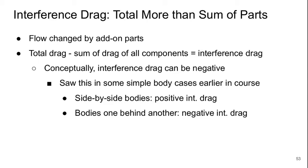Interference drag is a case where the total is typically more than the sum of the parts. The flow is changed by the presence of add-on parts like mirrors. The total drag minus the sum of the drag of all the components is the interference drag. Conceptually, interference drag can be negative — with side-by-side bodies there was positive interference drag, but with bodies in series there was negative interference drag.